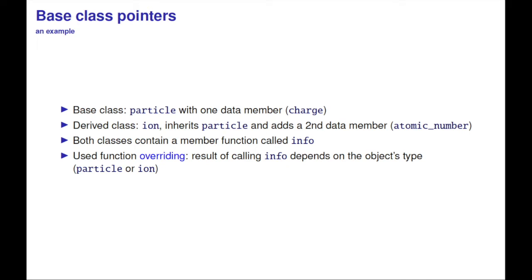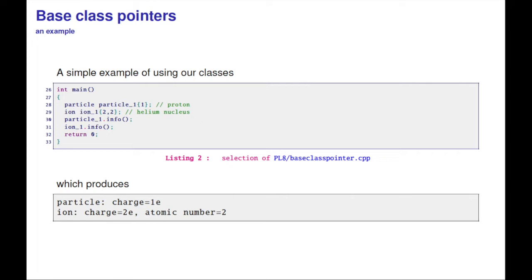The result of calling info depends on which object type I call it with. Let's look at a simple example. I initialize a particle, initialize an ion, and print out the info. For the particle, charge is one electron charge. For the ion, charge is two electron charges and atomic number is two, which is the helium nucleus.